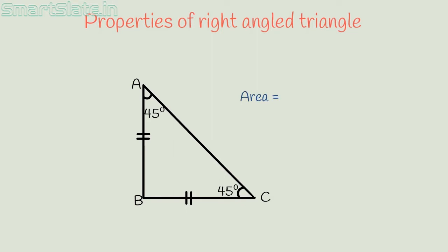Area of a right-angled triangle is half the product of sides containing the right angle.